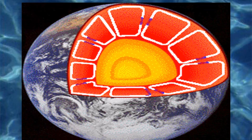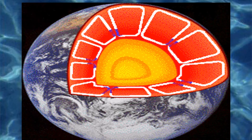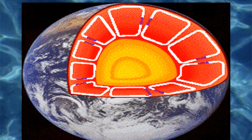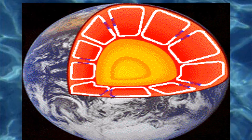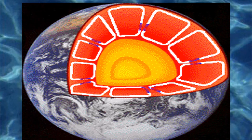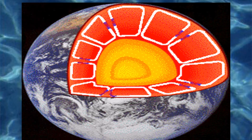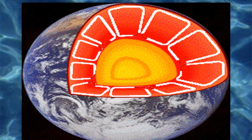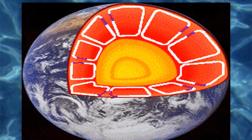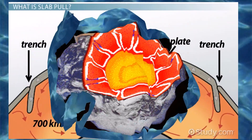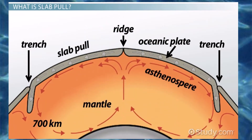The hot, soft rock rises, cools, and sinks, then is heated and rises again. If this sinking and rising motion continues, it is called a convection current that transfers heat energy through the asthenosphere.